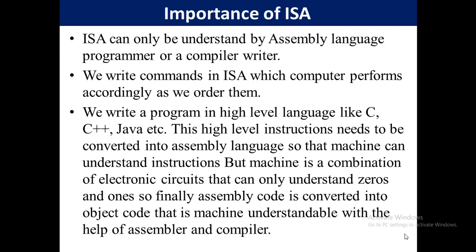The machine is a combination of electronic circuits that can only understand 0s and 1s. So finally, assembly code is converted into object code. First we convert the high-level language into assembly code, and then the assembly code is further converted into object code — machine-understandable code — with the help of an assembler and compiler. That's why we need ISA: we convert high-level commands into low-level assembly language commands, which are the language of hardware.